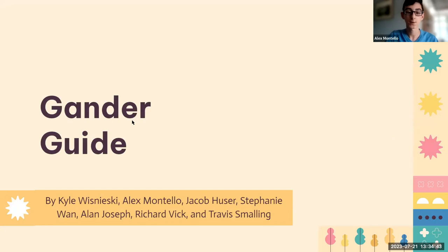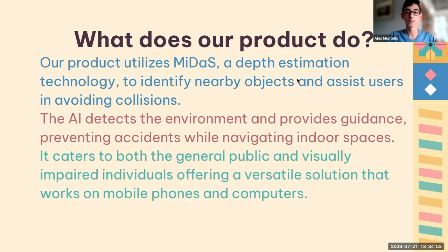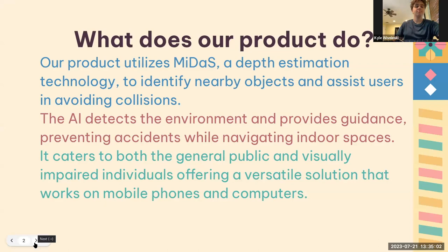This is Gander Guide by the Gleepal Geese. Our project utilizes MIDAS, a depth estimation technology to identify nearby objects and assist users in avoiding collisions. The AI also processes objects in the environment, which allows it to warn the user. Our product is made for the average person as well as for the visually impaired, offering a versatile solution that works on mobile phones and computers.